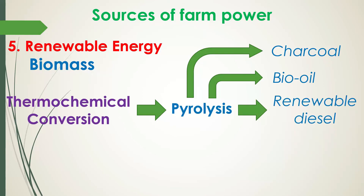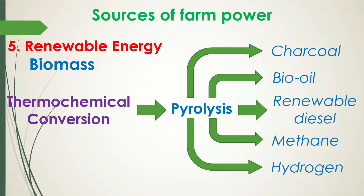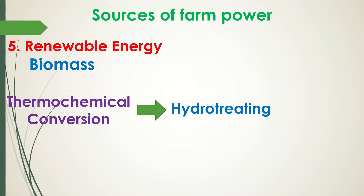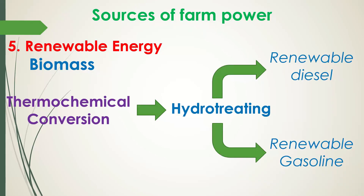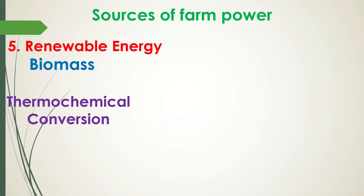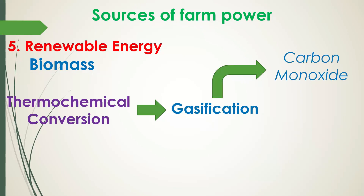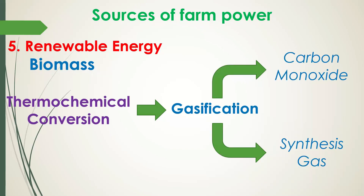Pyrolysis produces fuels such as charcoal, bio-oil, renewable diesel, methane, and hydrogen. Hydrotreating is used to process bio-oil produced by fast pyrolysis with hydrogen under elevated temperatures and pressures in the presence of a catalyst to produce renewable diesel, renewable gasoline, and renewable jet fuel. Gasification entails heating organic materials to 1400–1700°F or 800–900°C with injections of controlled amounts of free oxygen and/or steam into the vessel.